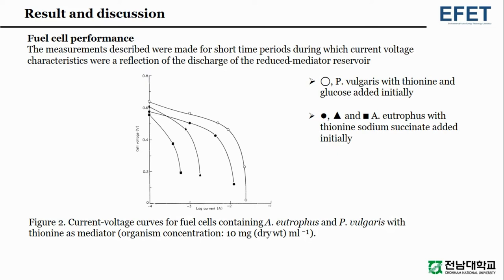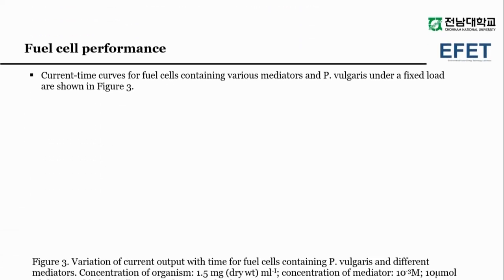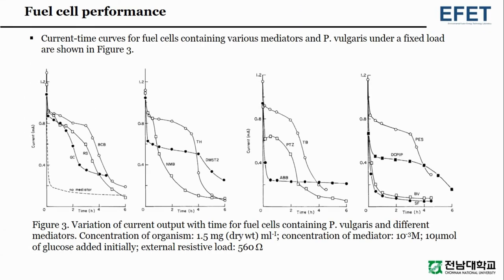The measurements described were made for short time periods during which current-voltage characteristics were a reflection of the discharge of the reduced mediator reservoir. Current-voltage curves for fuel cells containing Alkaligenes eutrophus and Proteus vulgaris with thionine as mediator are shown: blank circle represents Proteus vulgaris with thionine and glucose added initially; filled circle, triangle, and square represent Alkaligenes eutrophus with thionine and sodium succinate added initially. Current-time curves for fuel cells containing various mediators and Proteus vulgaris under a fixed load are shown in Figure 3.